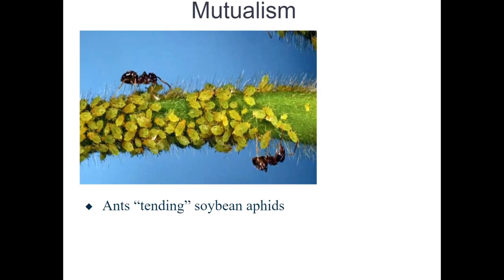Another example is ants protecting aphids — a two-way mutualistic relationship. Aphids suck on plants (harmful to the plant, but that is a separate relationship). Between ants and aphids: the ants will protect the aphids and harvest the aphids' sugary leftovers, while the aphids feed off the plants and remain safe from predatory bugs because the ants fight for them.